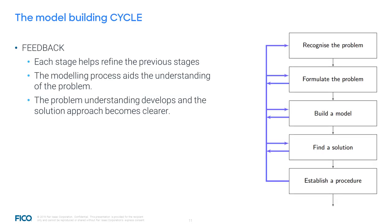As you might have already noticed, this is not a linear process, but a cycle — or rather a multitude of cycles. At every single step there is feedback to the previous step. Each stage refines the previous stages, and the modeling process helps in understanding the problem more and more. At each step, we might find a special situation which needs to be included in the modeling formulation at some previous stage. Until the final model, we might have to take several full passes of this loop, but certainly many small passes of error-correcting sub-loops.